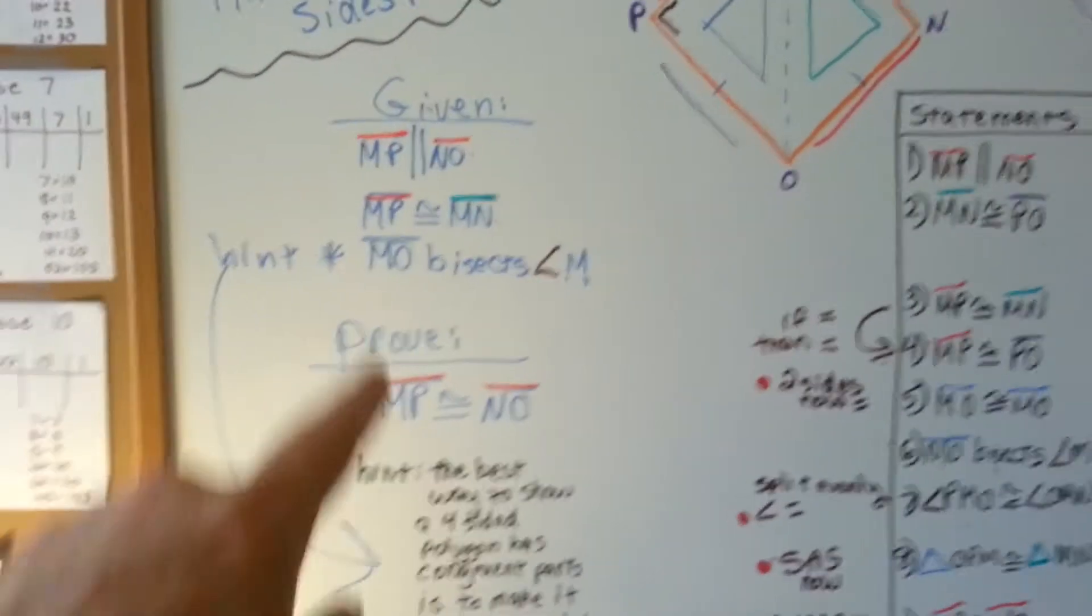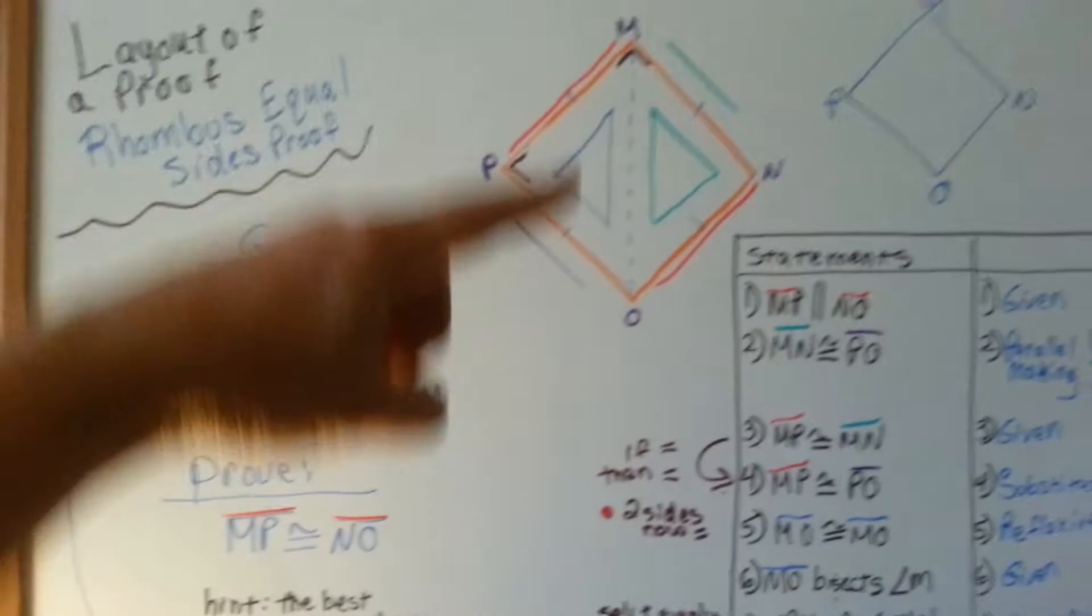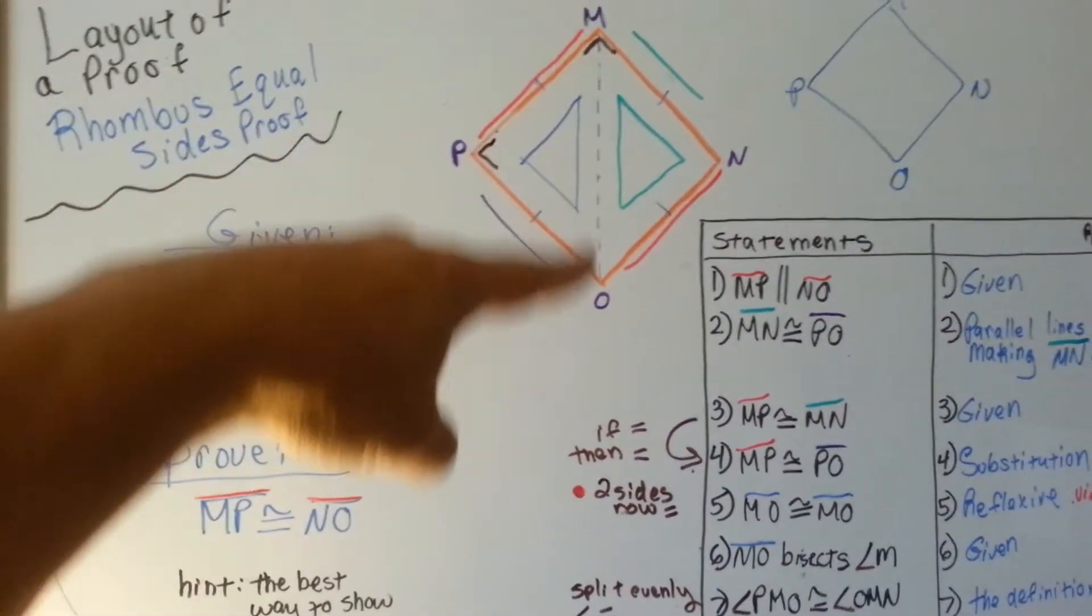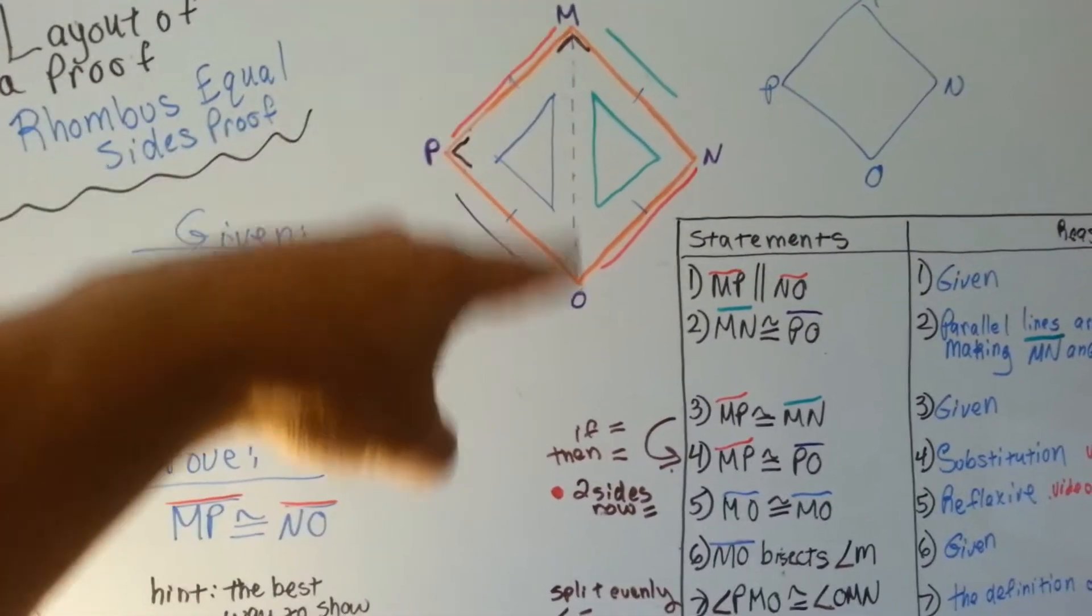So the only way to do it is to really look at the given and the prove to see if there are clues that there's supposed to be a line. And that right there telling you that MO bisects it, yep, we need to put a line there.